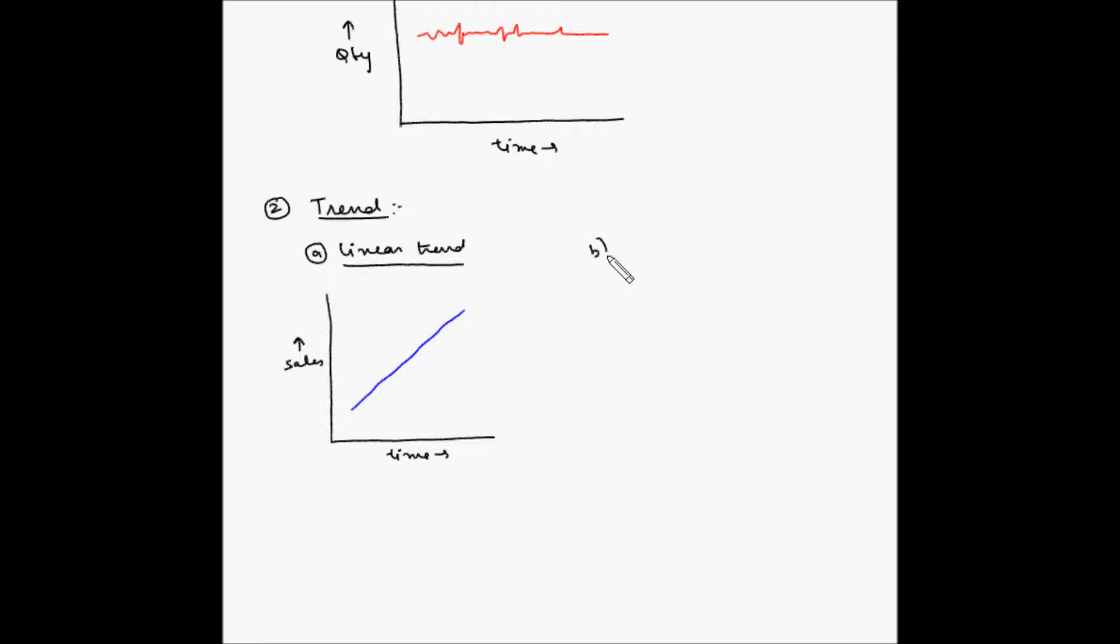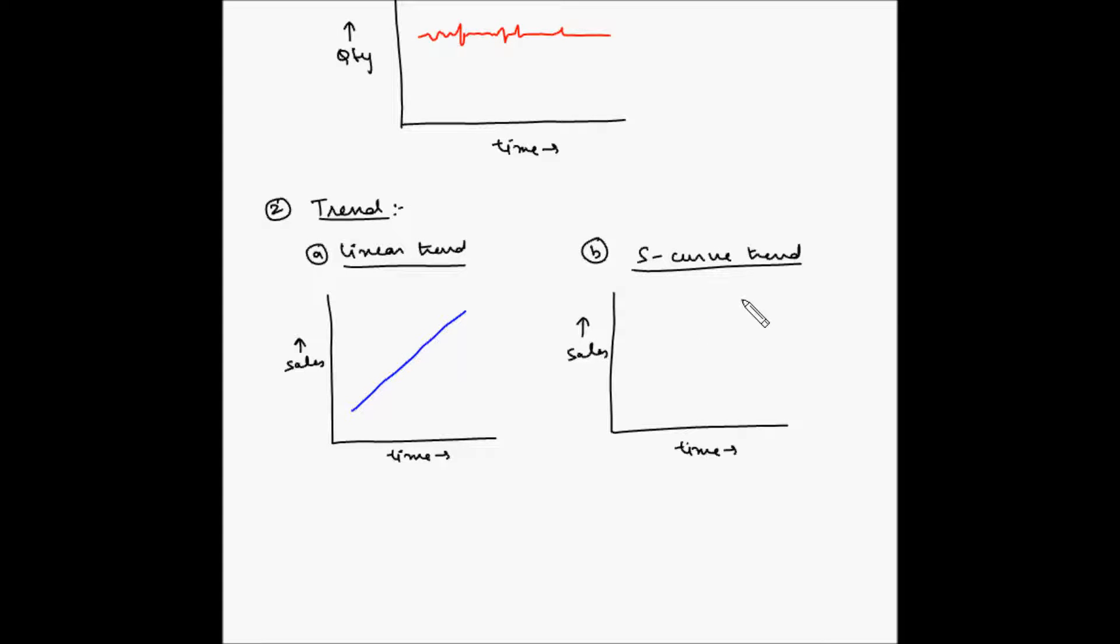Second type of trend is s-curve trend. Again, time versus sales and the graph will be like this. So this s-curve reflects the life cycle of a product's growth. Initially the growth is slow, and then it picks up, and then again it slows down.